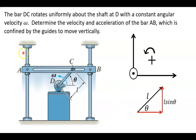Also notice that because this has vertical guides, AB has no lateral motion. This prismatic coupling will only allow it to go up and down and it doesn't have any influence left or right.